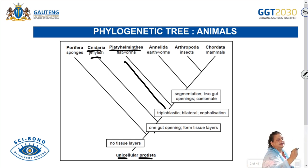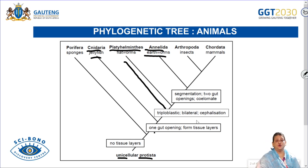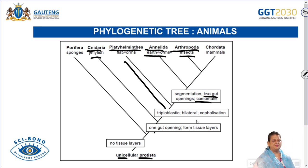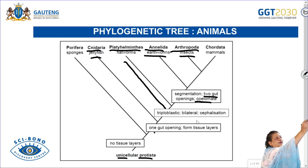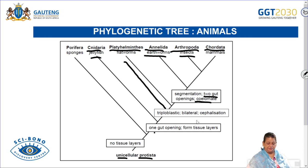The flatworms become more complex as they are triploblastic, meaning three layers. Then we moved on to the Annelida, your earthworms, which are more advanced than your Platyhelminthes because they have a coelom and two gut openings. Then we moved to the Arthropoda — your insects like grasshoppers, spiders, and ants. They become more complex, and then we have your Chordata, your mammals, which have a backbone. This gives an overview of the progression of animals from simple to complex.